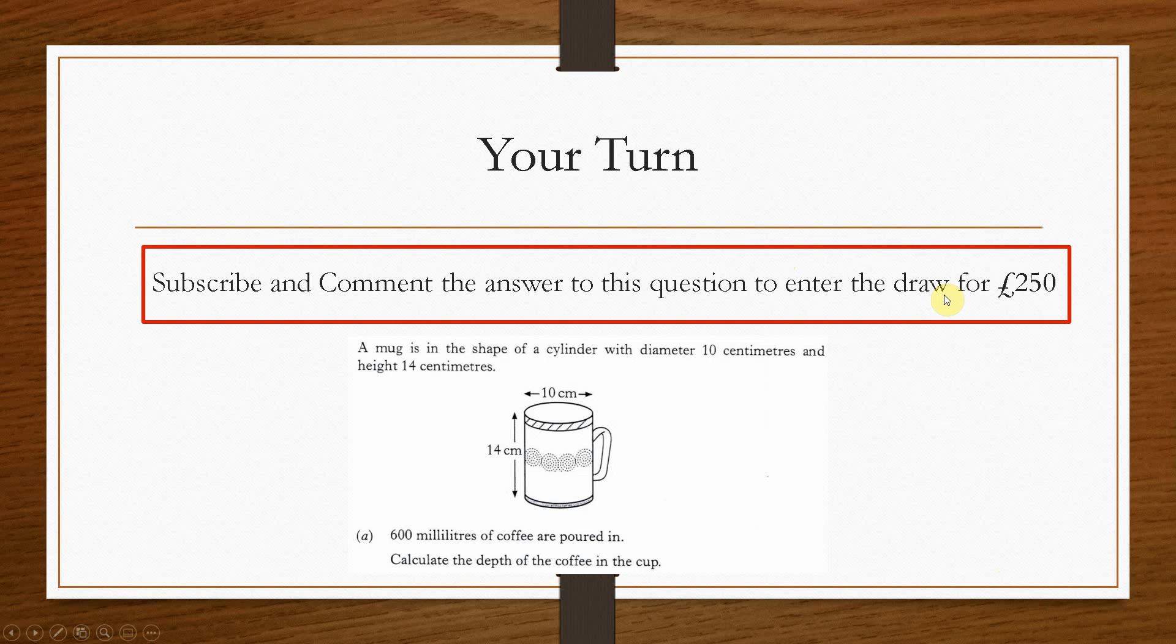So now it's your turn. So in order to enter our 250 pound prize giveaway every month, all we have to do is answer the following question correctly. So we're given a mug in the shape of a cylinder, and we're given some dimensions. And we need to calculate the depth of the coffee within the cup if we have 600 milliliters of coffee poured in.